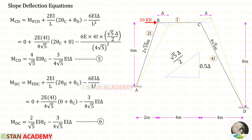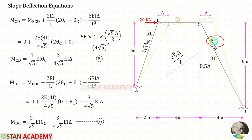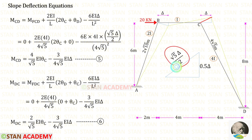Now let us make the slope deflection equations for member CD. In this member also the sway moments should be taken as negative. The length of CD is 4 root 5. The moment of inertia is 4i, so instead of i we apply 4i. For member CD the displacement is root 5 upon 2 delta, so instead of delta we apply that. Finally, for member CD we have made two equations.